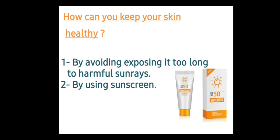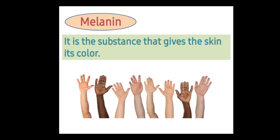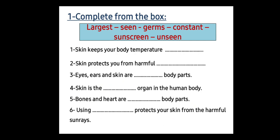Number two: by using sunscreen or sun block. Also, all of us are different in color. Why? Because inside our body we have something called melanin. Melanin gives our skin its color. We are different in our color because of melanin.